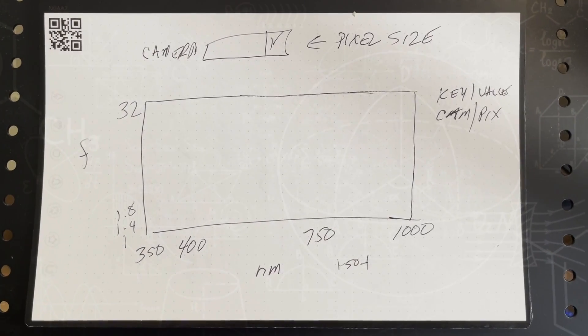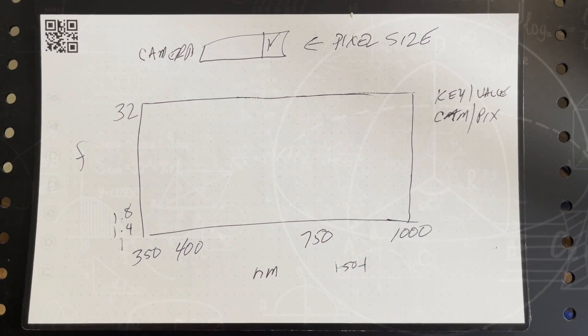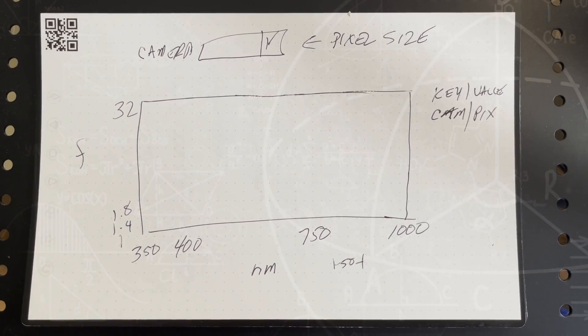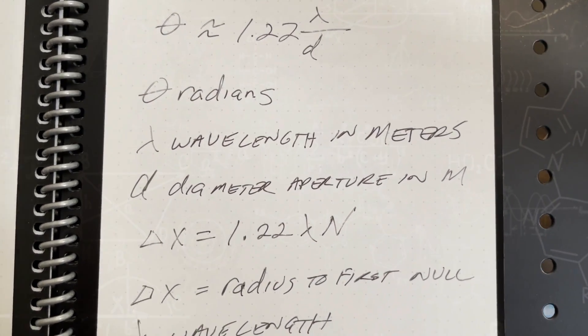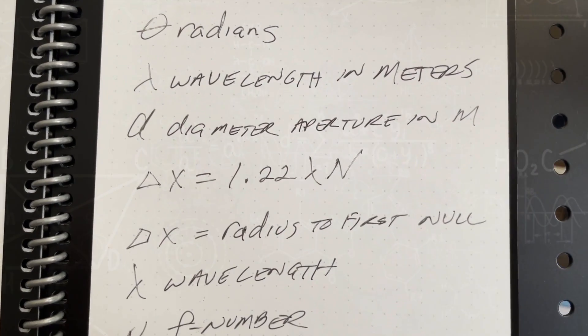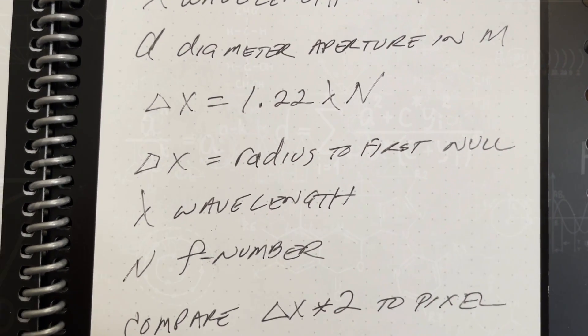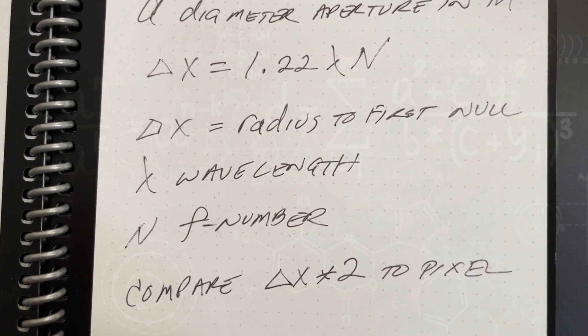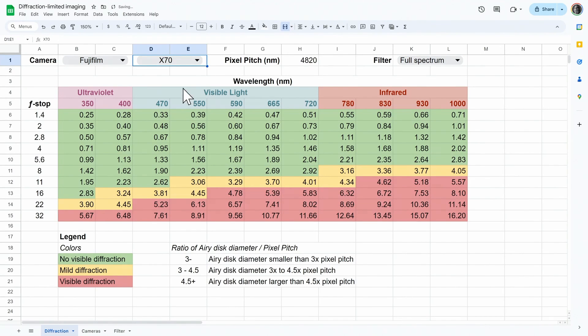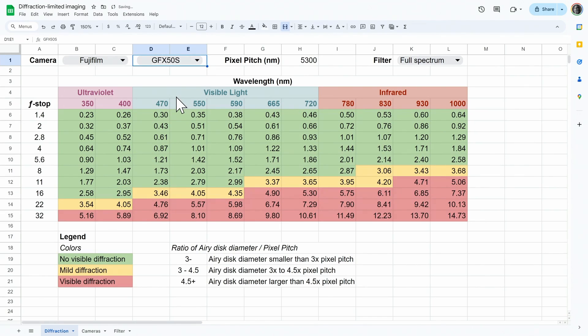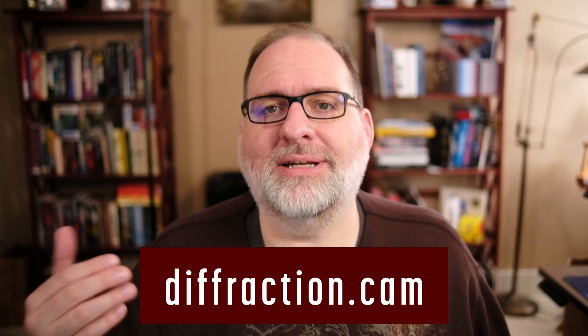Recently, I had an idea, so I sketched it out: I know that you can calculate the size of the Airy disk if you know the wavelength of light and the aperture of your lens. If you compare the size of the Airy disk to your sensor, you should be able to calculate when visible diffraction appears. The next step was mocking up the idea in a spreadsheet to see if it would work. So I did that, and it worked. Finally, I turned it into a website — diffraction.cam.